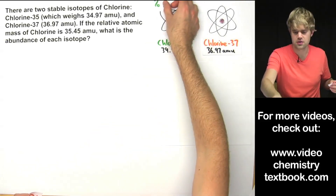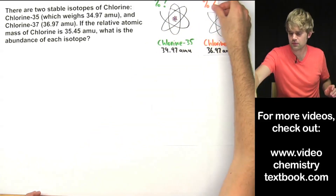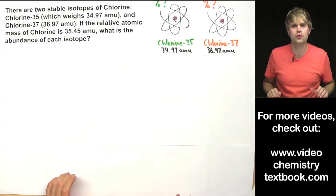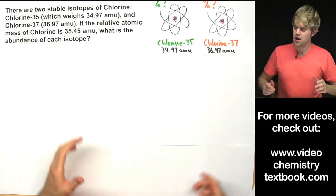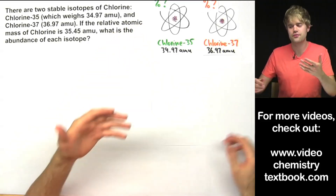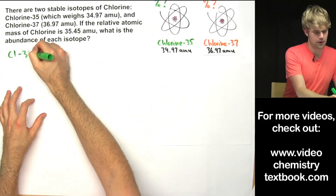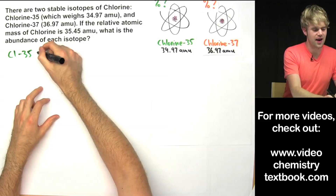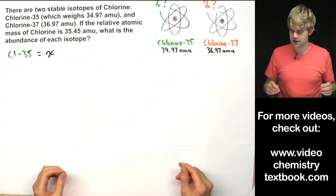What we're solving for is what's the percent abundance of chlorine-35 and what's the percent abundance of chlorine-37. They're both unknowns right now. So how are we going to go about solving the problem? Since these are unknowns, the first thing let's do is assign some variables. Chlorine-35 — let's call that x. The percent abundance of it will be x.